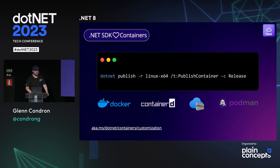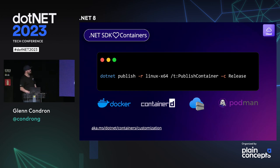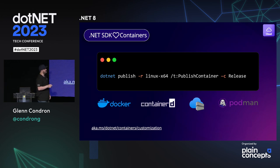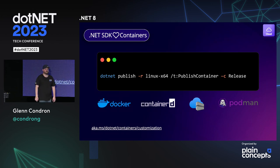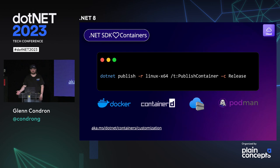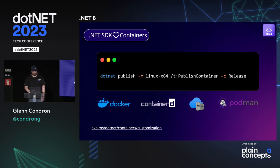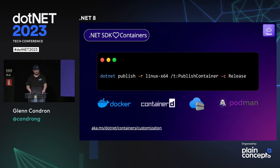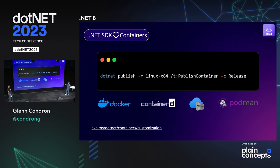Another one we mentioned earlier: the ability to publish a container image natively. If you type this command for your .NET 7 or 8 application, you just get a Docker container — without a Docker file, without even Docker running on your machine. You don't need Docker Desktop, WSL, or Hyper-V. This also makes your builds faster because we've removed all those steps.